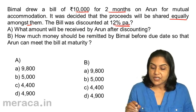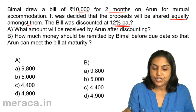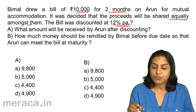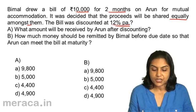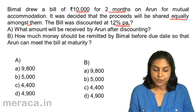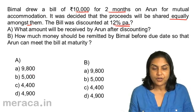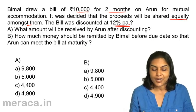They have decided to share the proceeds equally. What is the amount which Arun will receive after discounting? The options given are: A) 9,800, B) 5,000, C) 4,400, and D) 4,900.